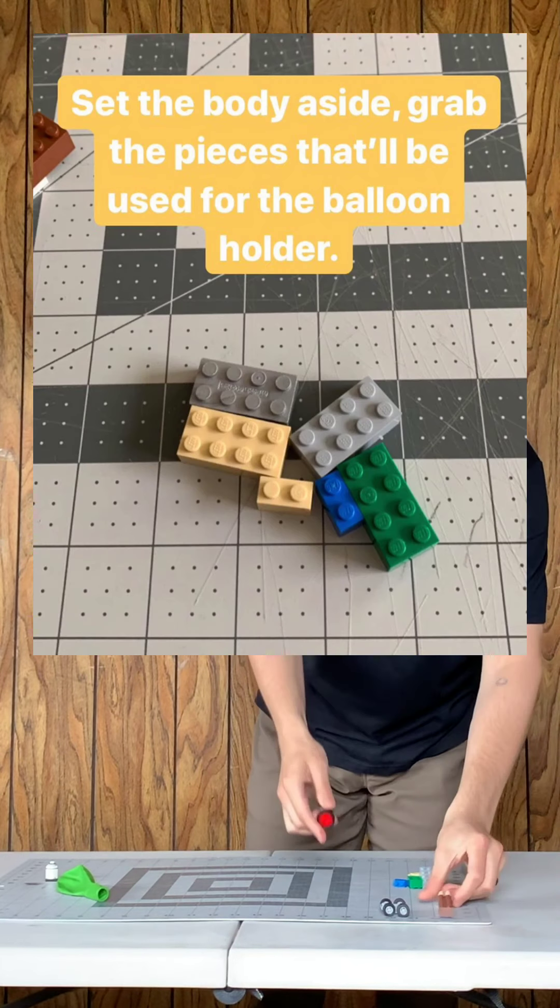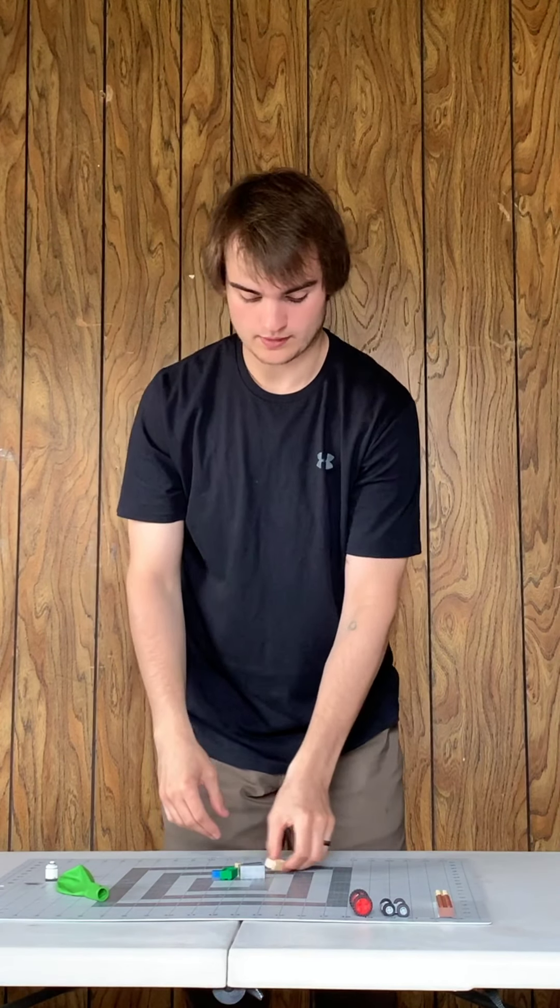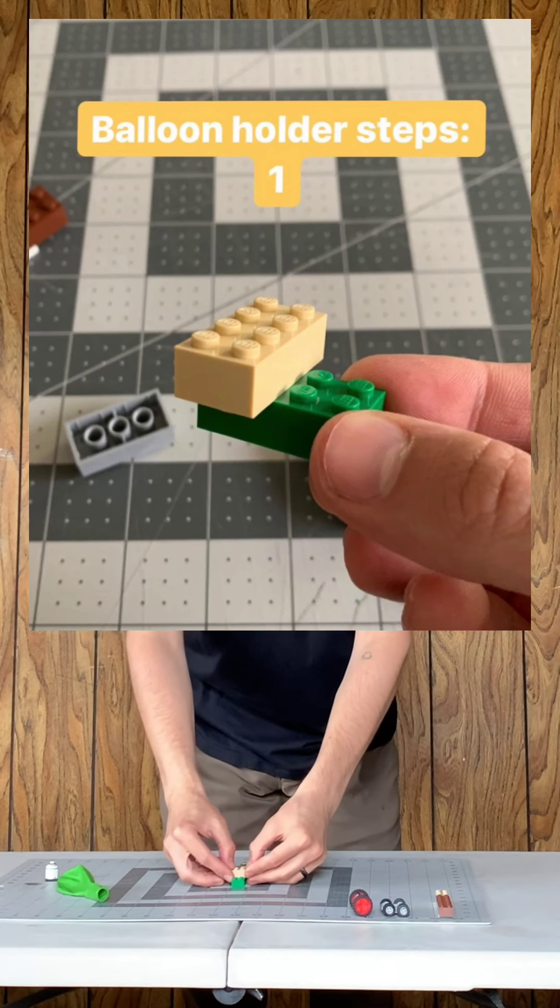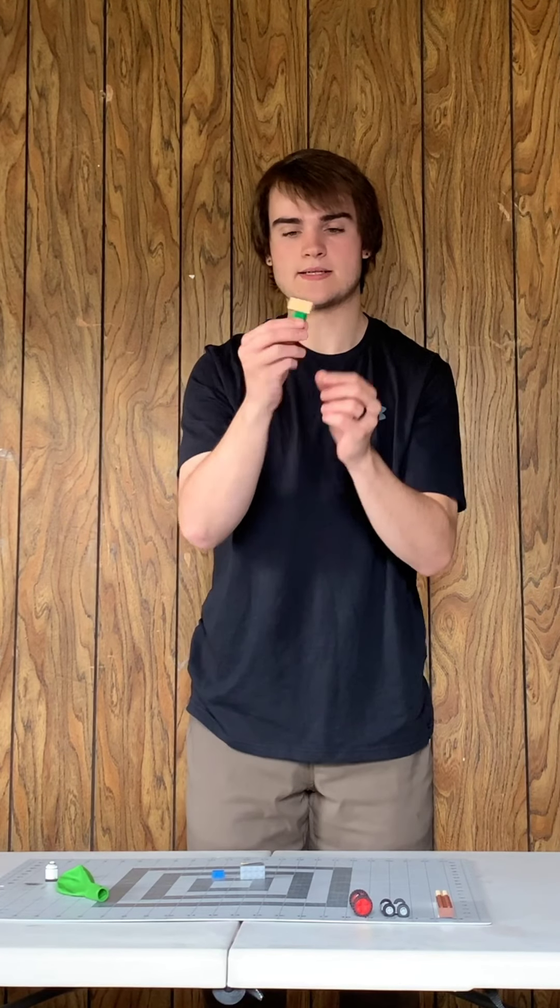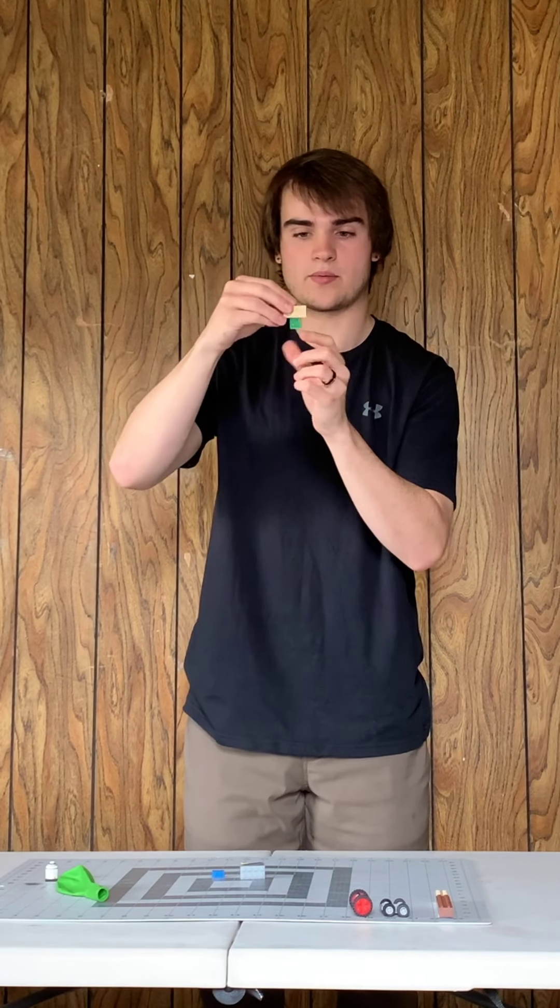Now we're going to move on to the balloon holder. The first piece we're going to have is this one and just lay it down. We're going to connect it like this so it's going to go crossways, so it's going to be like making a T. So you have this one going straight up and down, the green piece, and then the tan piece is going horizontally.